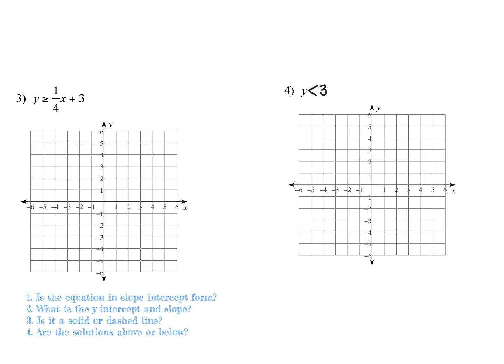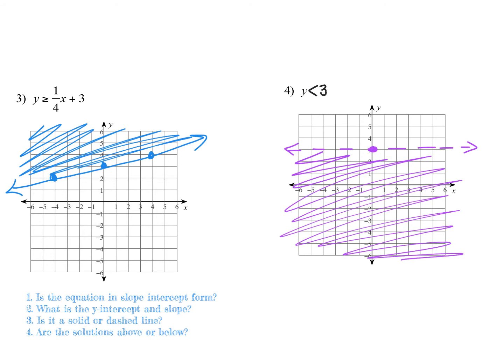For example three: it's in slope-intercept form. The y-intercept is at three, slope is rise one, run four — or fall one, run left four. It's greater than or equal to, so 'or equal to' means a solid line, and shade above for all y-values that are bigger.